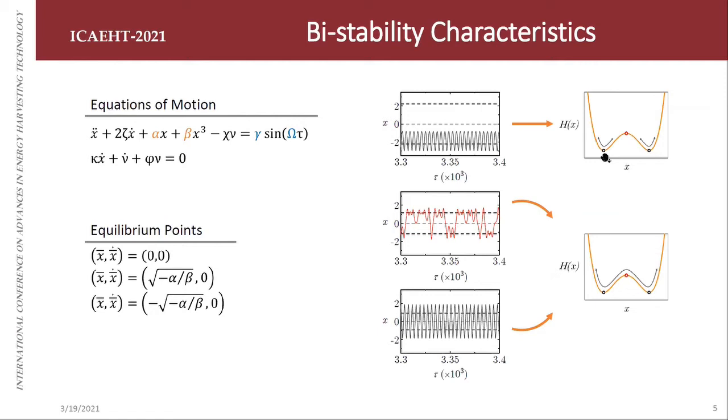And then the system can exhibit three types of motion. The first one here is the intrawell motion, where the system can oscillate around one stable equilibrium point. The second one is the partial interwell motion, where the system can oscillate around two stable equilibrium points but not entirely always. And the third one is a full interwell motion, where always the system oscillates around two equilibrium points.